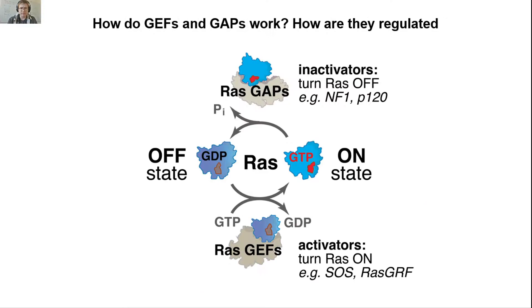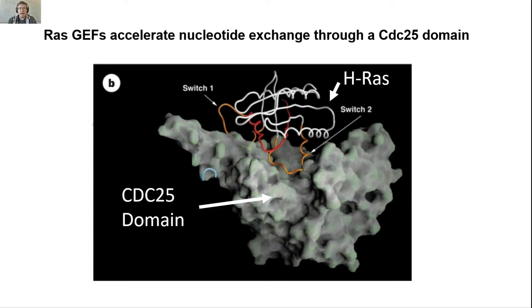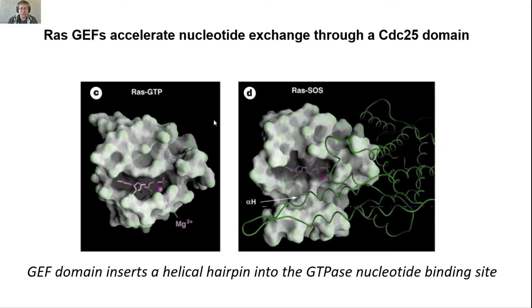Let's go through each one of these GEFs and GAPs one by one and figure out how they work and how they can be regulated. Let's start with the GEFs, because these are the things that turn RAS on. The way that RAS-GEFs accelerate nucleotide exchange is through what is called a CDC-25 domain. You're seeing here a crystal structure of the CDC-25 domain interacting with the RAS-GTPase. This RAS is very slow to exchange nucleotide normally. If you look at the structure of just plain old RAS bound to GTP, look at how intimate the contacts are between the RAS-GTPase and this nucleotide — it's buried very deep, with a lot of contacts.